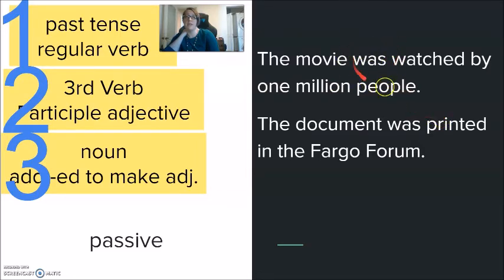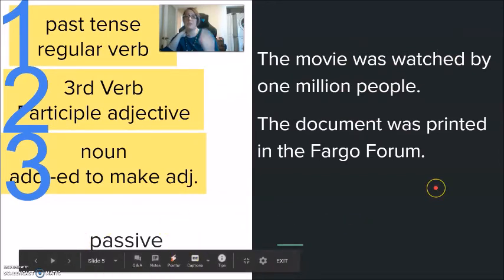The movie was watched by one million people. Here the verb was, be, using the -ED to make the passive. I could change it to present tense. The movie is being watched. Right now the movie is being watched by one million people. I can change it to the future. Next year the movie will be watched by one million people. Different from this number one where we are talking about regular verb in the past. Here we are talking about still a regular verb being made into passive. But this could be present. This could be past. This could be future.